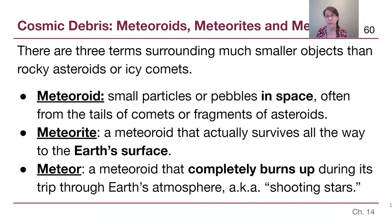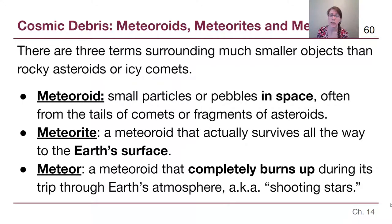Meteors are typically referred to as shooting stars. If you've ever wished on a shooting star, what you are seeing is a small dust grain burning up in Earth's atmosphere — and then it's gone.